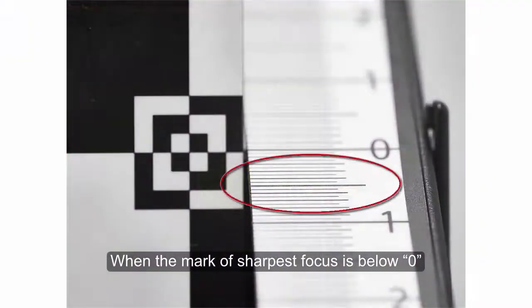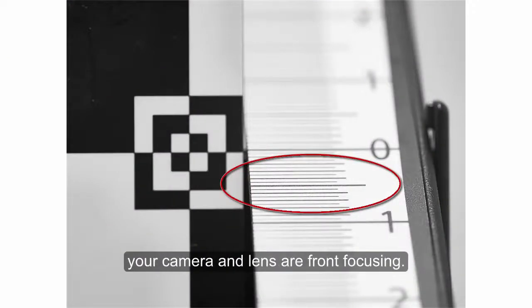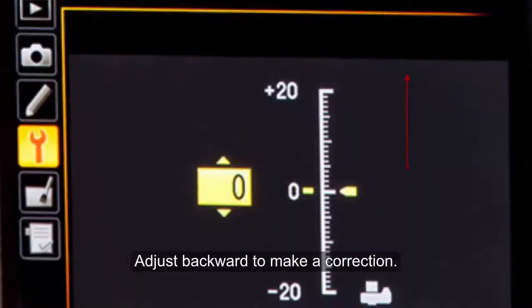When the mark of sharpest focus is below zero, your camera and lens are front focusing. Adjust backward to make a correction.